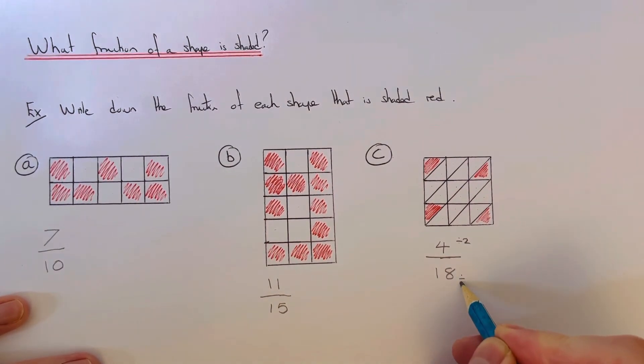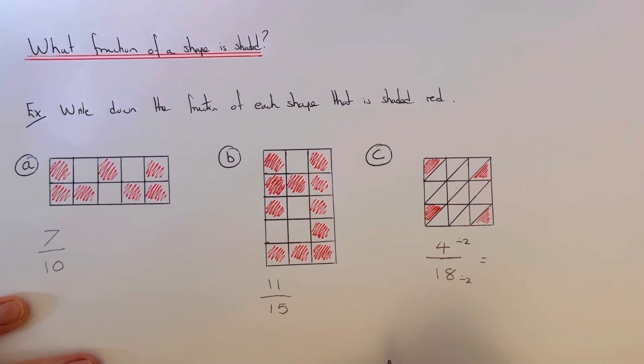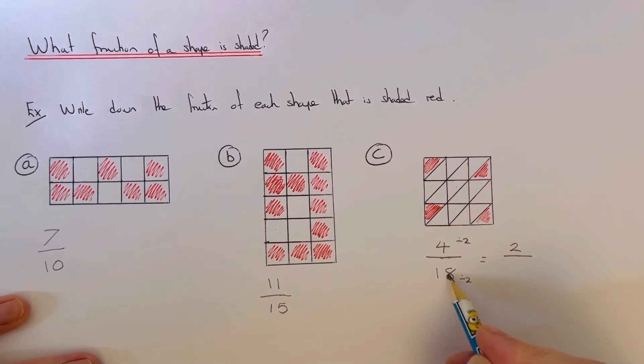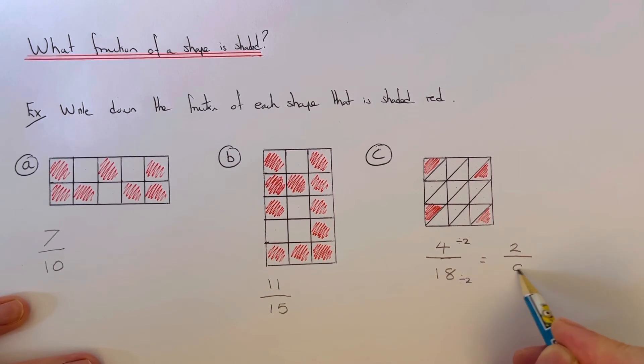So four divided by two goes two times, eighteen divided by two goes nine times. So our final answer is two-ninths.